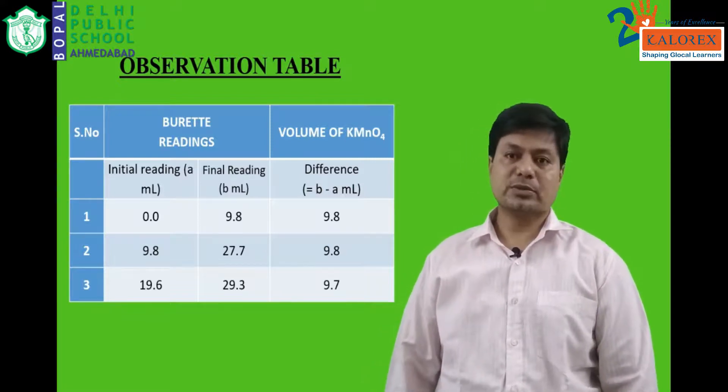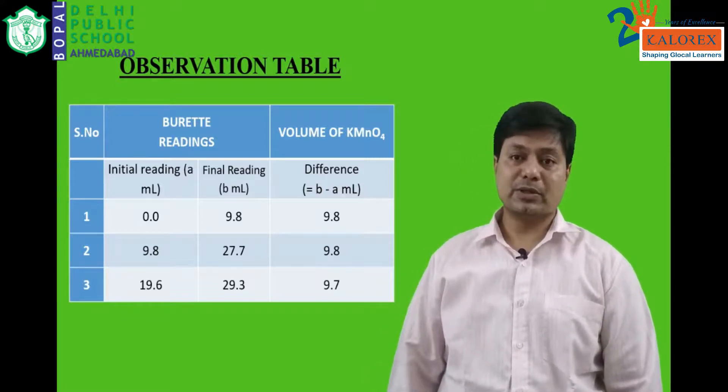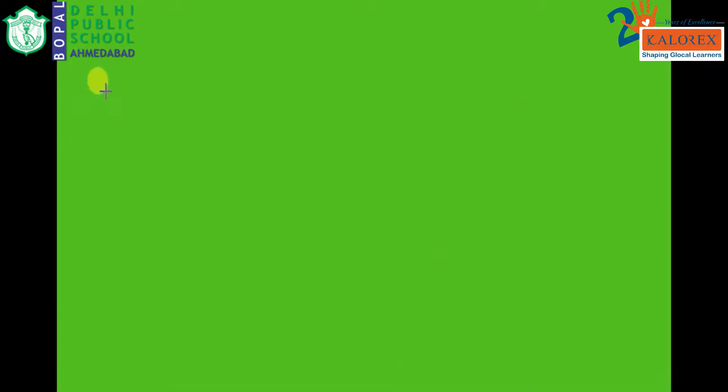After writing the observation table, let us see the calculation. For calculation, let us use the formula a1 m1 v1 is equal to a2 m2 v2. Let us take the left hand side as KMnO4, potassium permanganate, and the right hand side as Mohr salt.